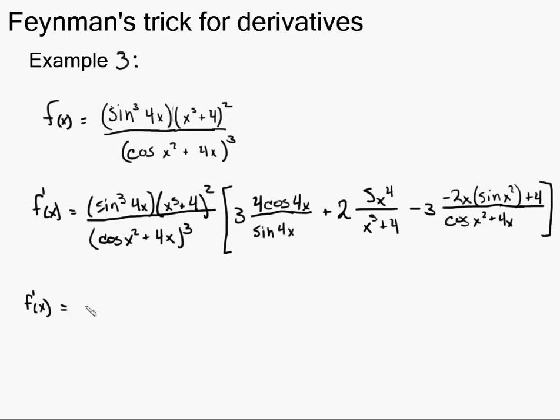So if I try and use the product rule, I'm going to do the first term and then write down the other two. The derivative of this is going to be 3 sine squared 4x times 4 cosine of 4x times this and this. So times x cubed plus 4 all squared. And I'm also going to put this here and just change the exponent. Cosine x squared plus 4x all cubed, negative 3 now that it's on top.